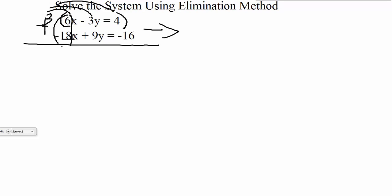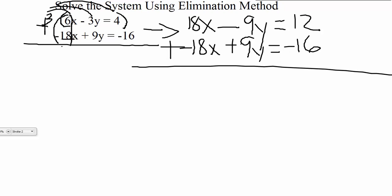We're going to distribute that 3 across the entire equation. So 3 times 6x is 18x minus 3 times 3y, which is 9y, and that's equal to 3 times 4, which is 12. Now that bottom equation, I'm just going to move it over. We did not do anything to it, but I'm going to move it over so that I can now add my two equations together in the hopes of something canceling out.